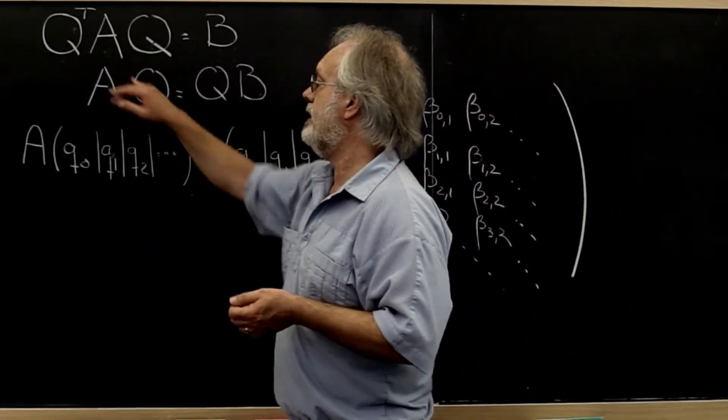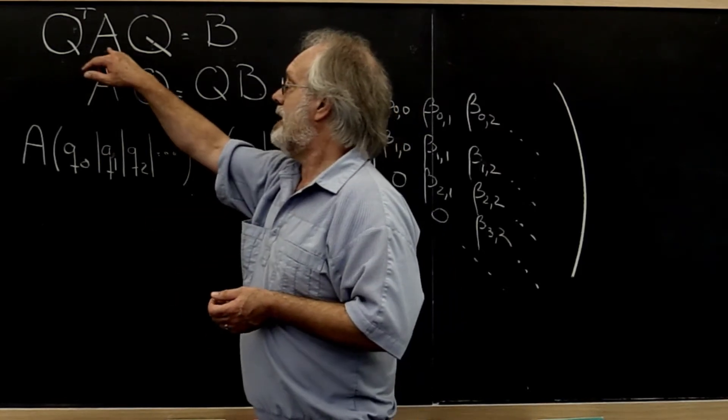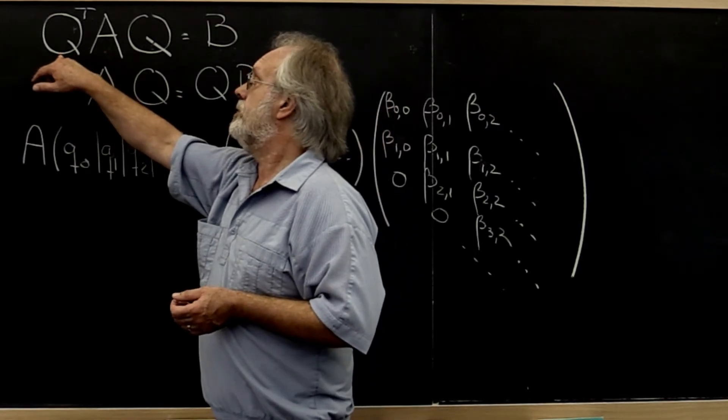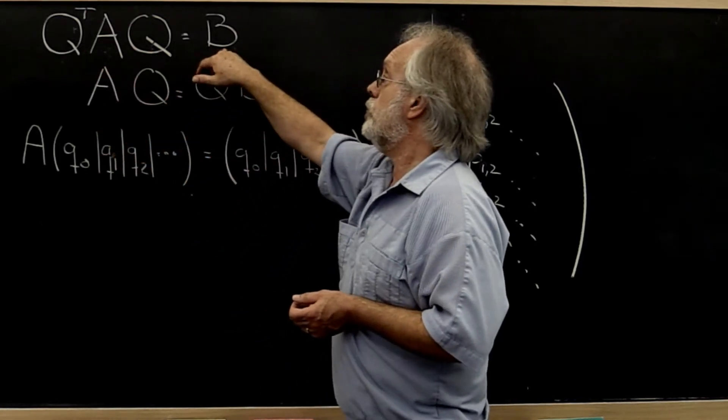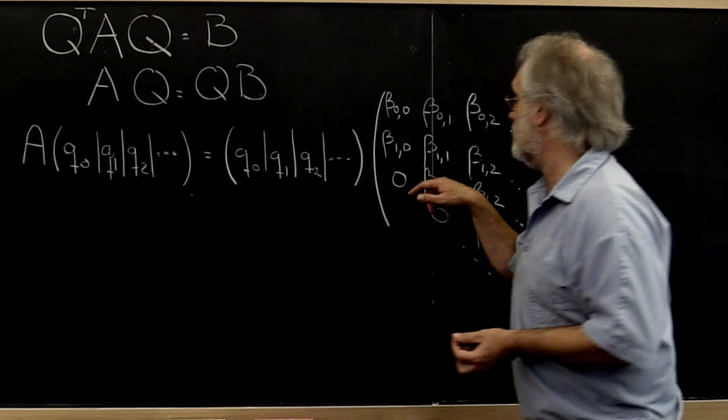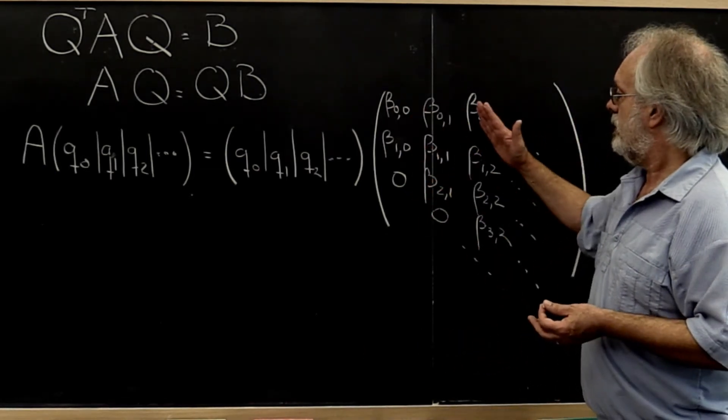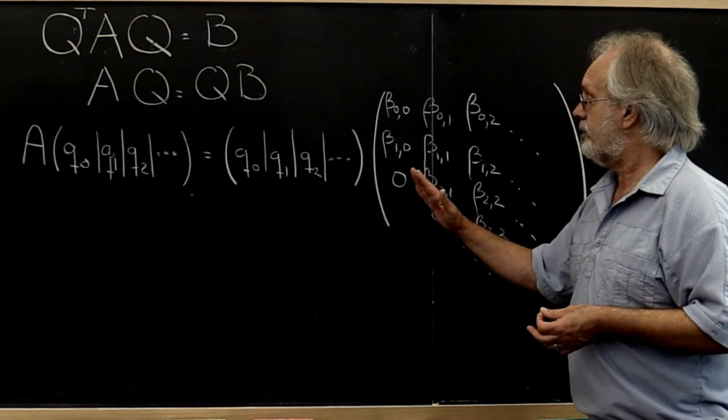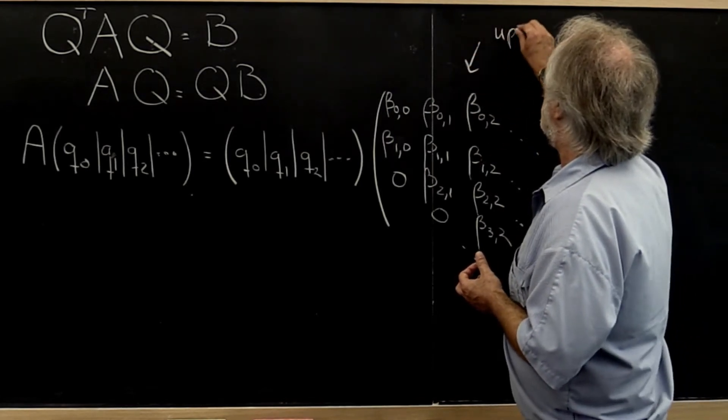Now it turns out that A doesn't even need to be tridiagonal. If you're given any matrix A and you have some unitary matrix Q such that Q transpose A times Q is equal to, well, not even a tridiagonal matrix, but its generalization, something called an upper Hessenberg matrix, where if the matrix is not symmetric then you could have non zeros above the first super diagonal even though you have zeros below the first sub diagonal. This is called an upper Hessenberg matrix.